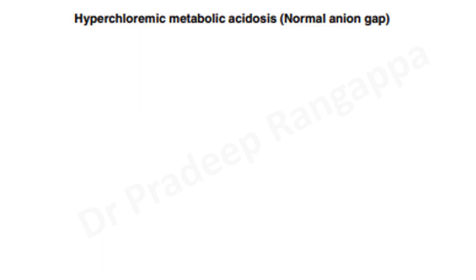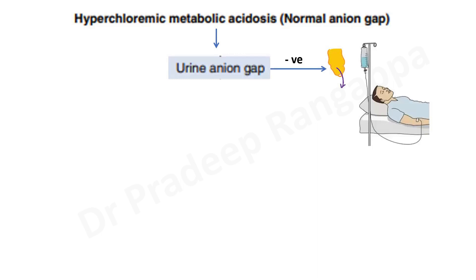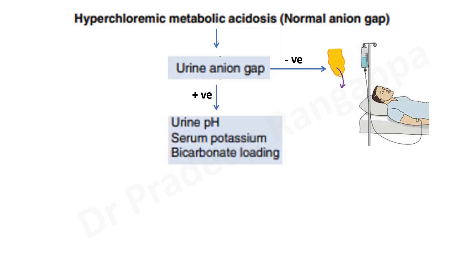For the clinical diagnostic algorithm: first, identify hyperchloremic metabolic acidosis with a normal anion gap. Then calculate the urine anion gap. If urine anion gap is negative, it suggests gut losses — diarrhea or large volume resuscitation. If urine anion gap is positive, it indicates a renal cause — then consider type 1, 2, or 4 RTA. Next, check urine pH, serum potassium, and consider bicarbonate loading.